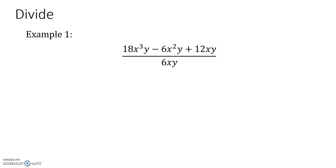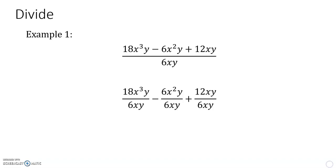We have a trinomial divided by a monomial. We can split it into three parts and see that each part of the trinomial is divided by that monomial.